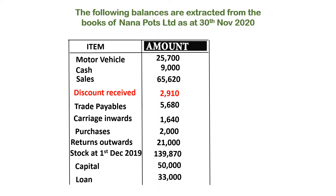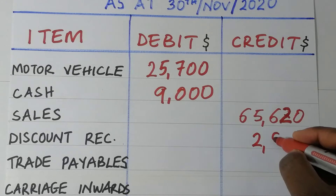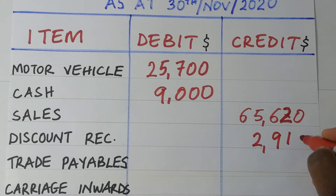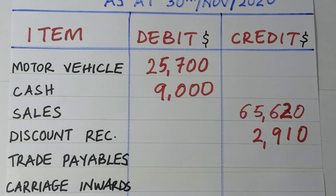Then we have what we call discount received. A discount received is an indirect income. It being an indirect income means that it will have a credit balance. So we go ahead and put that figure of $2,910 on the credit side.